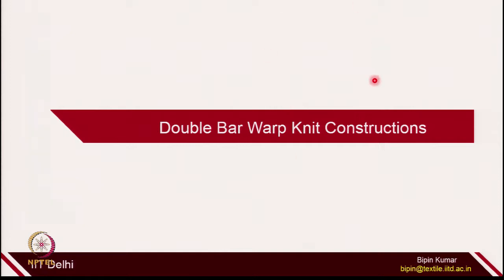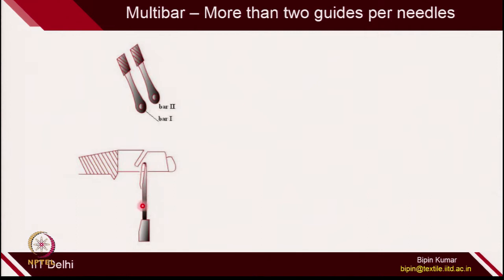This is what we covered in the last classes, mainly focusing on single bar construction. Now let's move to double bar warp knit construction. In double bar construction, each needle will get the chance to interact with 2 guides, and each individual guide will be connected to a different bar.